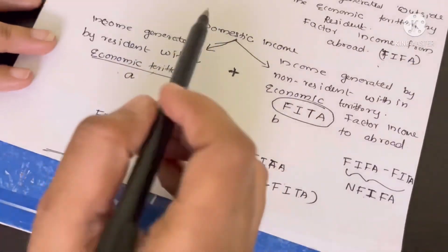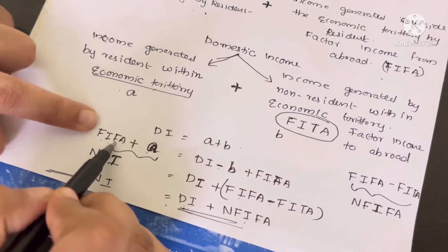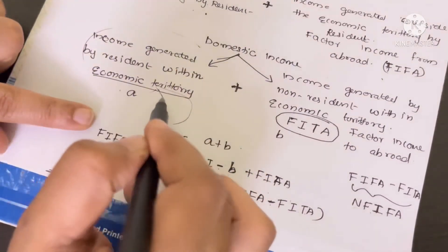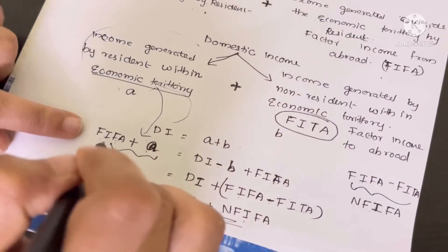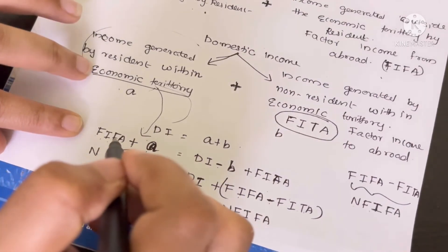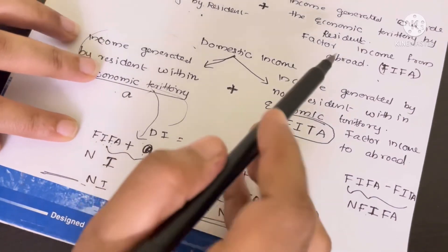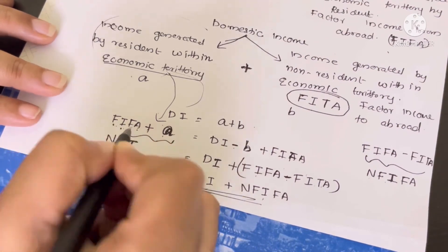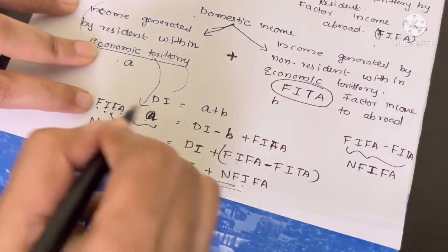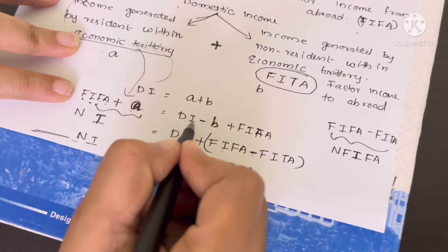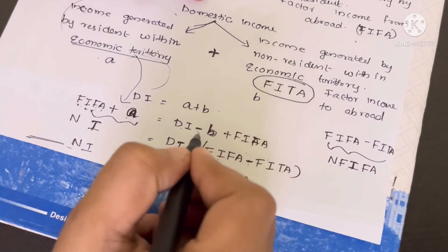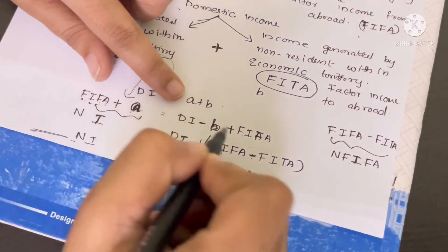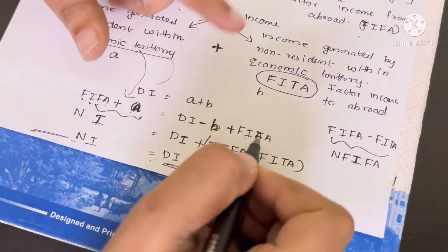National income is income generated by residents within the economic territory, plus income generated by residents outside the economic territory — that is the factor income from abroad. Domestic income minus income generated by non-residents within the territory, plus factor income from abroad equals national income.